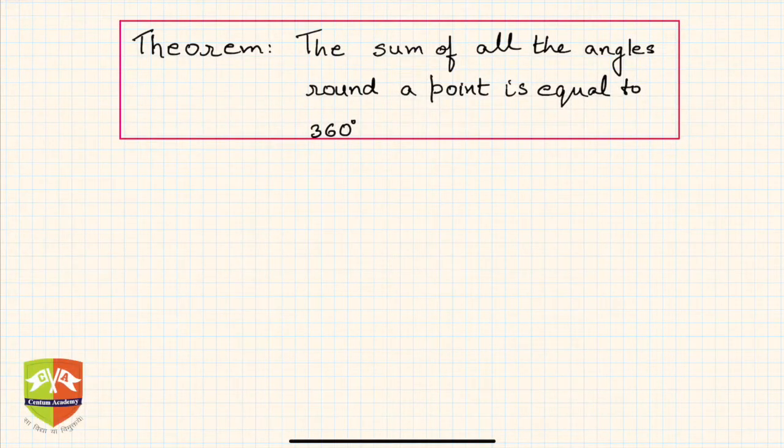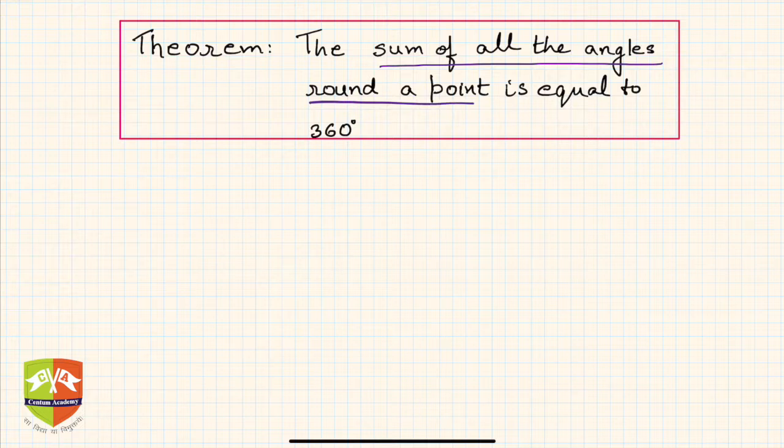Okay friends, so I am back again with another theorem and we are going to prove today that the sum of all the angles around a point is equal to 360 degrees. It's knowledge which you have acquired sometime back and now it's time to prove it. So the statement is: the sum of all the angles around the point is equal to 360 degrees.